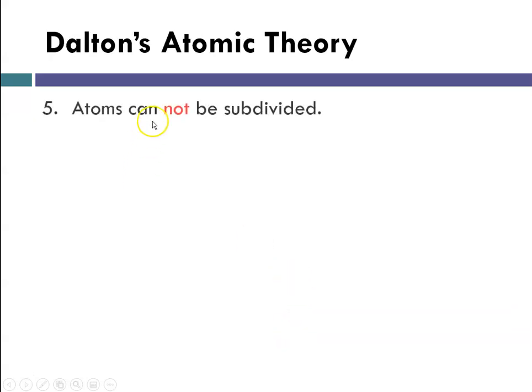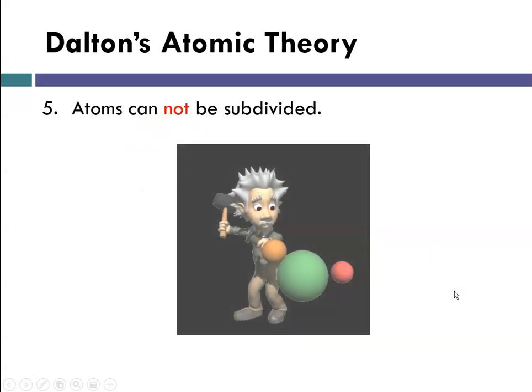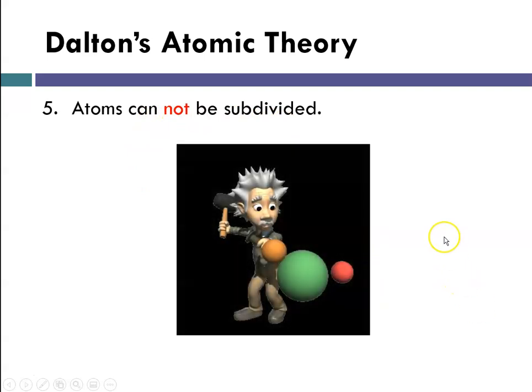When Dalton said this, it was fairly earth-shattering because he was saying no, not by chemistry. You can't change atoms of one element into atoms of another element. Finally, he stated that atoms cannot be subdivided. Here's my little Einstein atom smasher.